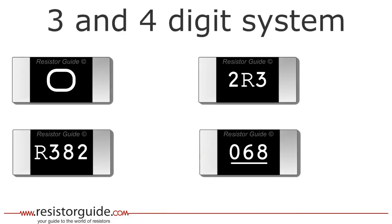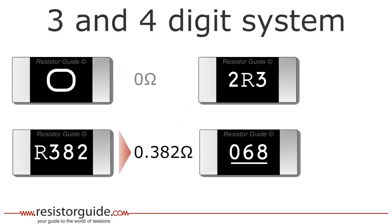Now we will solve four examples which are a bit different. The first one has only a zero and represents a so-called zero ohm resistor with no resistance. The next resistor has the letter R as its first digit. The R represents a decimal point, so this resistor has a value of 0.382 ohms.